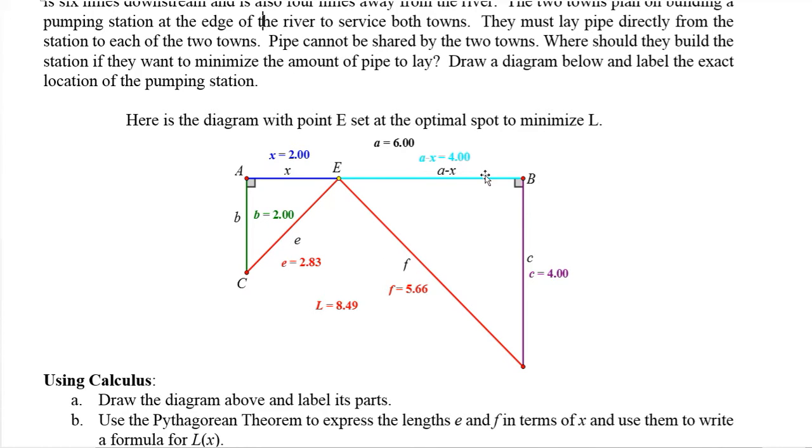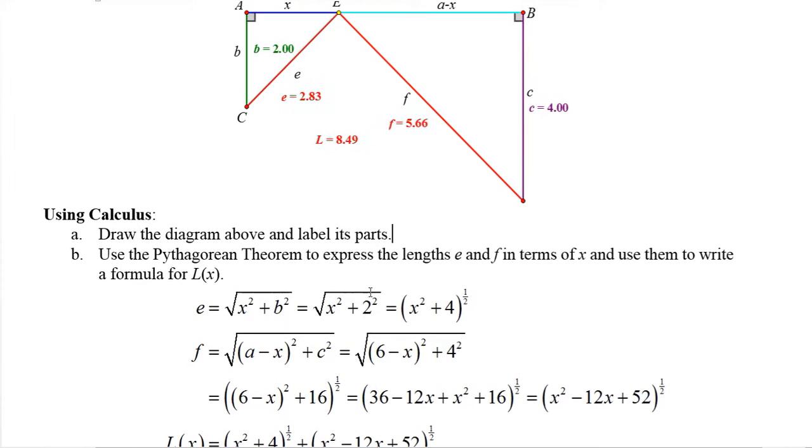Similarly this is six minus x, this is four. We could get that F is the square root of six minus x squared plus four squared. So let's call these distances E and F. E is x squared plus b squared. In this case b is two, so it's x squared plus four, and then square root of that or one half power. Similarly we get six minus x squared plus four squared, and then square root or the one half power.